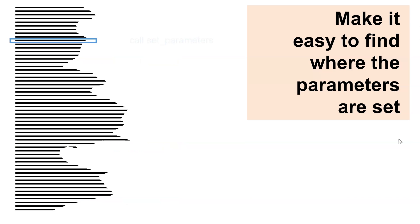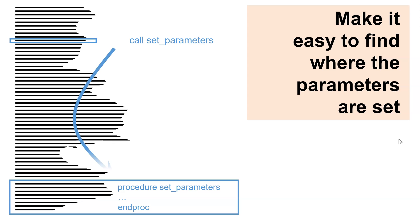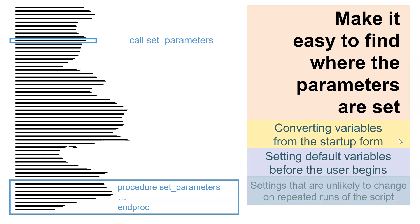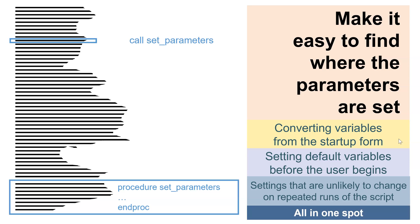My strategy is to put them all in a single procedure that sets everything at once. Notice how, when you call this procedure, it'll just jump down to the bottom and then back up to resume right where it left off. This can be used to convert your variables from the startup window, set defaults, and also store some settings that are important but which you don't want to burden the user with. Most importantly, they all go into one spot that's easy to find if you just scroll to the end.